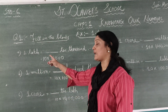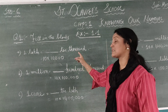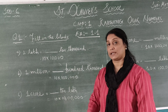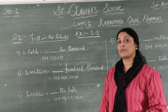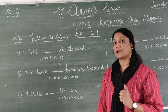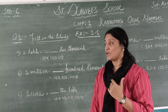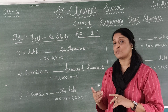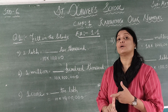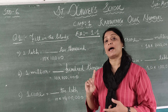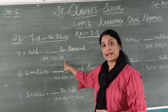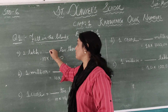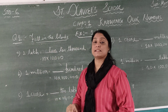Part A: 1 lakh is equal to blank times 10,000. Here 10,000 is given. How many zeros are in 1 lakh? There are 5 zeros. 10,000 has 4 zeros. To get 5 zeros, you multiply by 10. So 10 multiplied by 10,000 equals 1 lakh. The answer is 10.